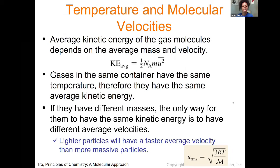Gases in the same container have the same temperature and therefore they have the same average kinetic energy. But if they have different masses, the only way for them to have the same kinetic energy is for them to have different average velocities. Our main take-home message is this: lighter particles will have a faster average velocity than more massive particles.